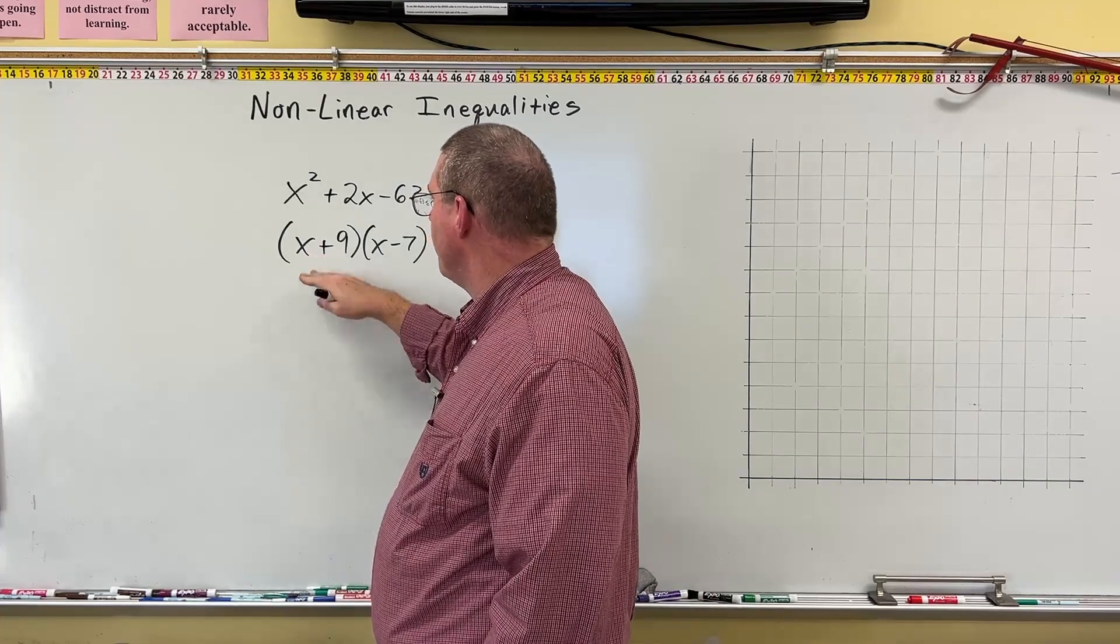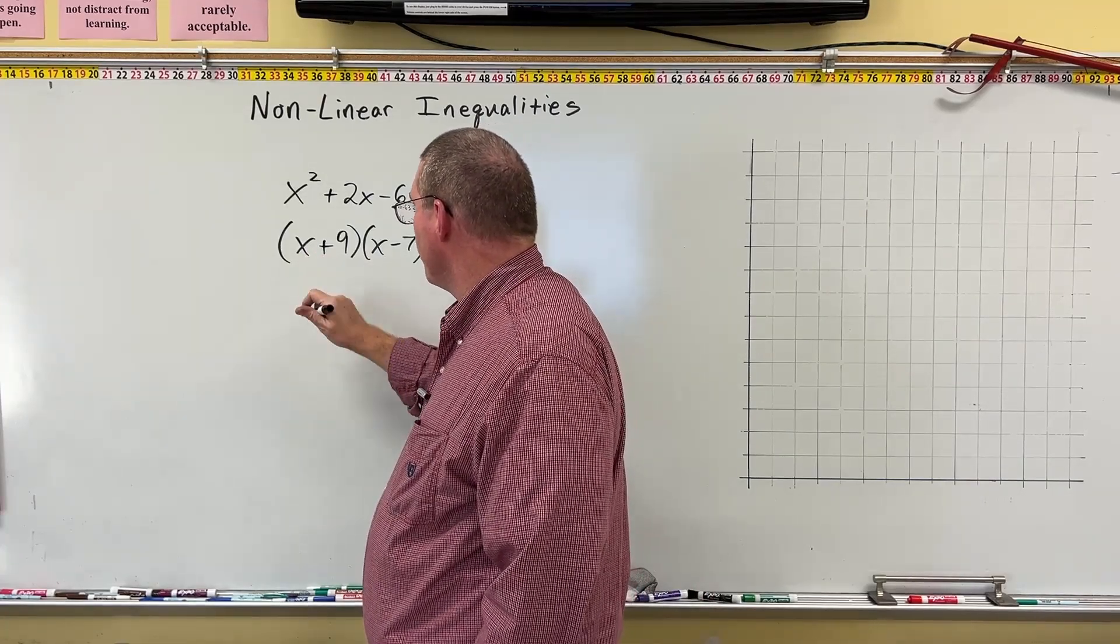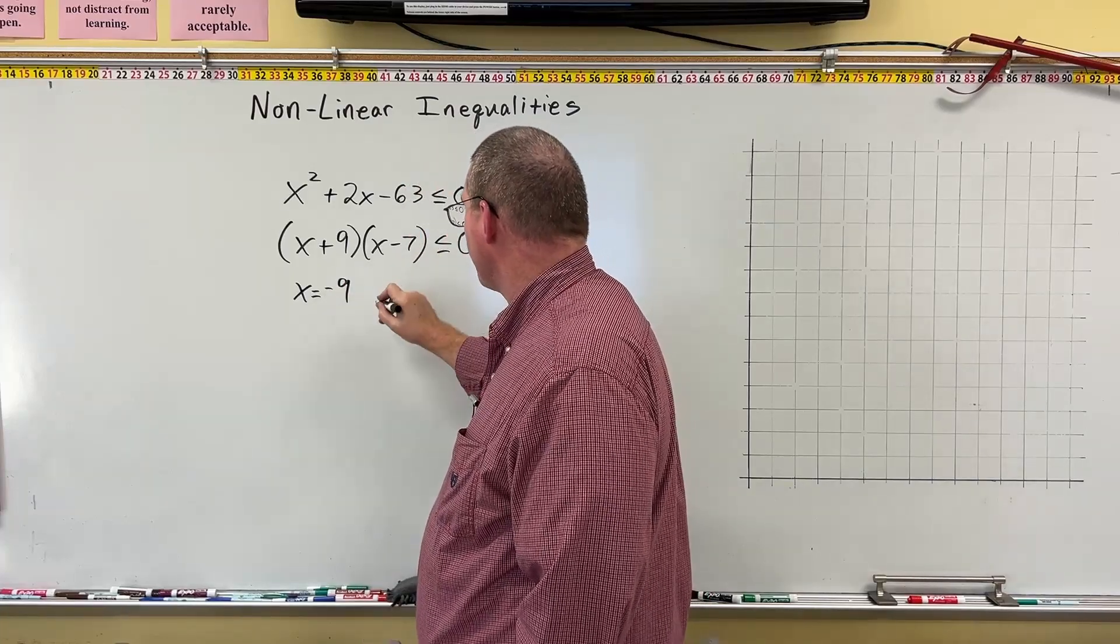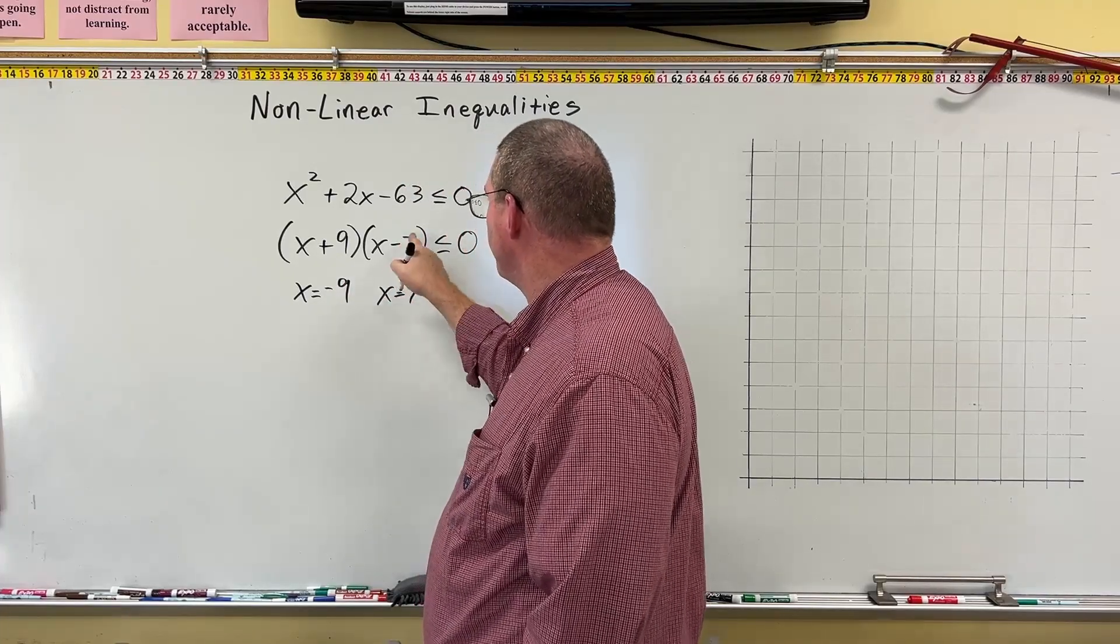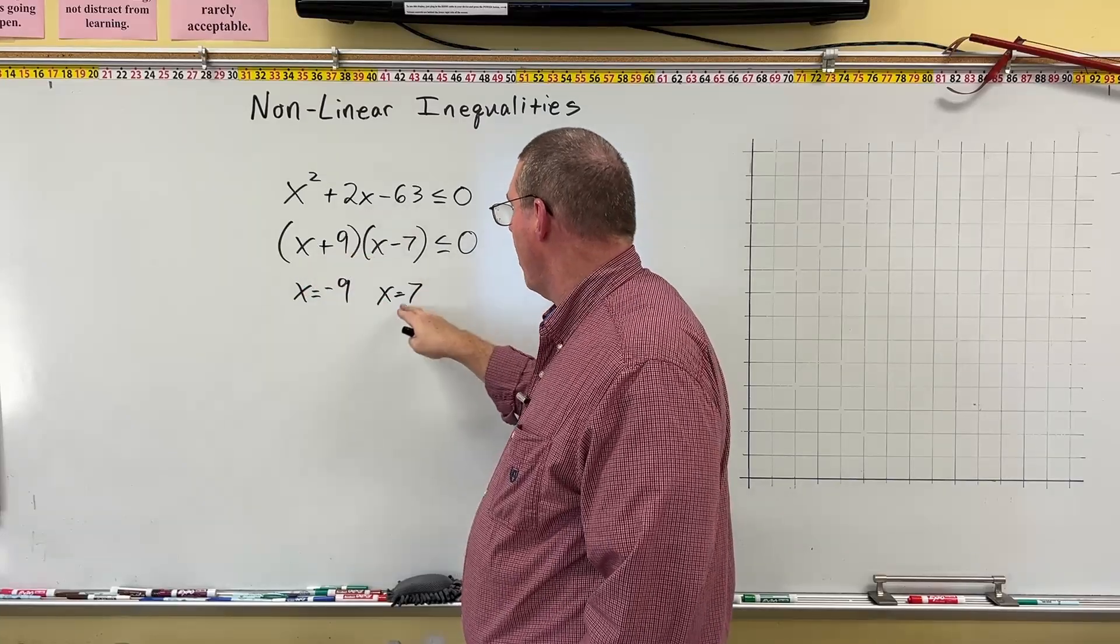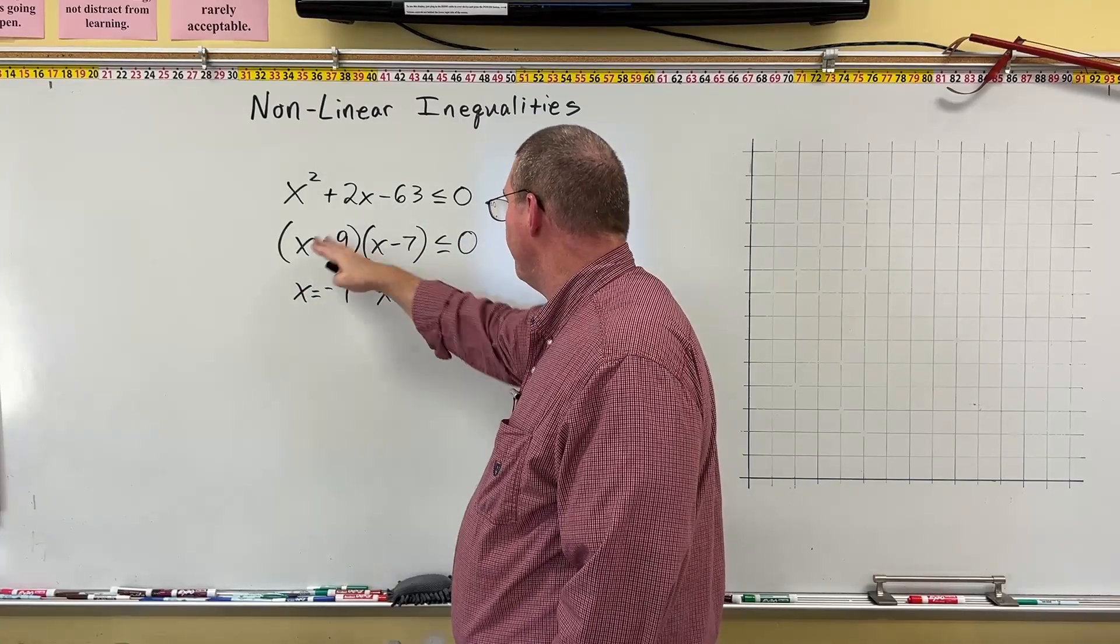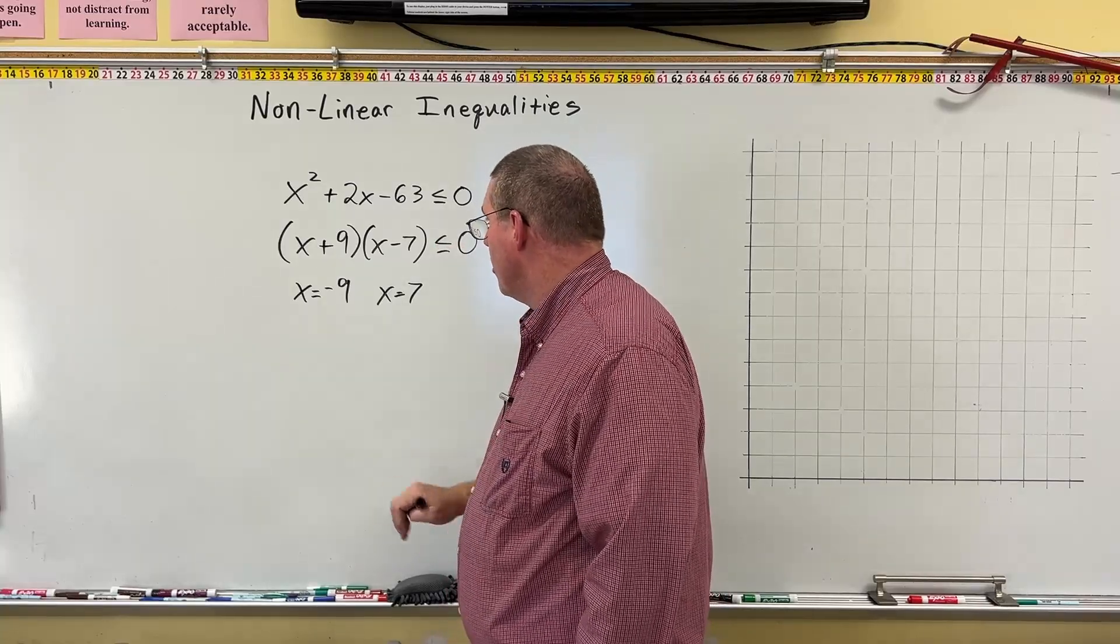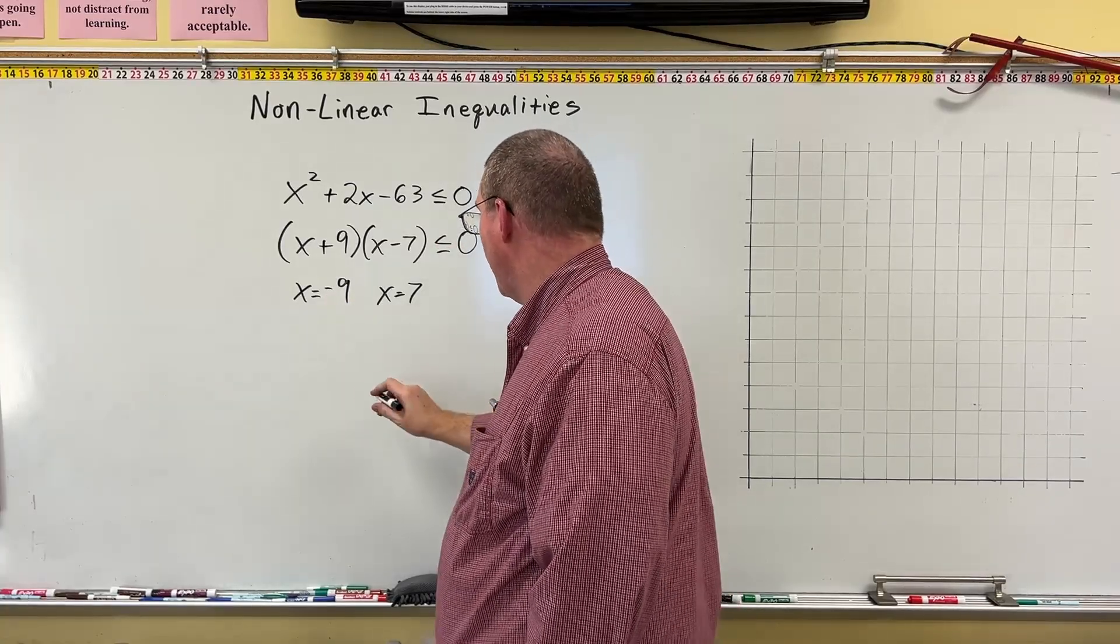It's really easy to find the zeros of these little binomials. So the zero of x plus 9 is x equals negative 9. And the zero of x minus 7 is x equals 7. And you just reverse the sign. Because negative 9 plus 9 is 0 and 7 minus 7 is 0. And if either one of these is 0, it's going to equal 0. So our critical values are negative 9 and 7.